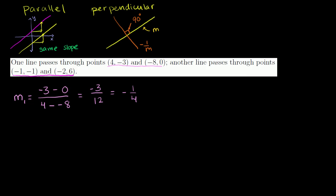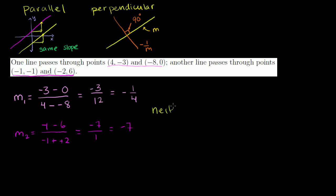Now for the second line: the slope is negative 1 minus 6 over negative 1 minus negative 2. Negative 1 minus 6 is negative 7, over negative 1 minus negative 2 — that's the same as negative 1 plus 2, which is just 1. So the slope here is negative 7. Their slopes are neither equal, so they're not parallel, nor are they the negative inverse of each other. So this is neither parallel nor perpendicular. These two lines intersect, but not at a 90 degree angle.